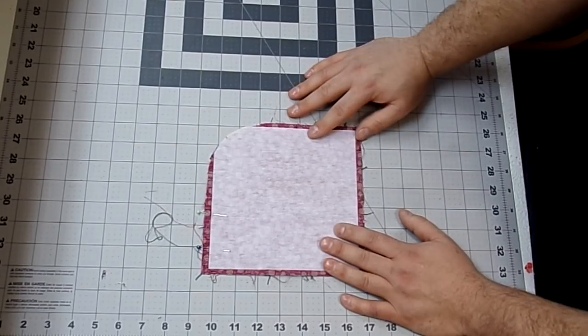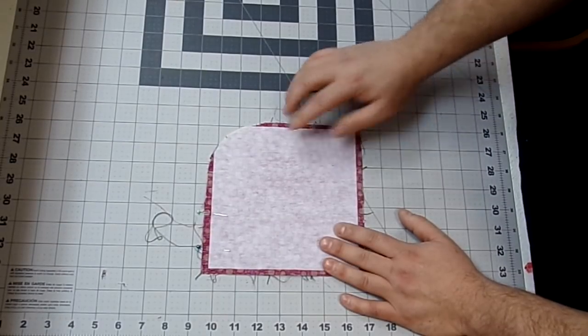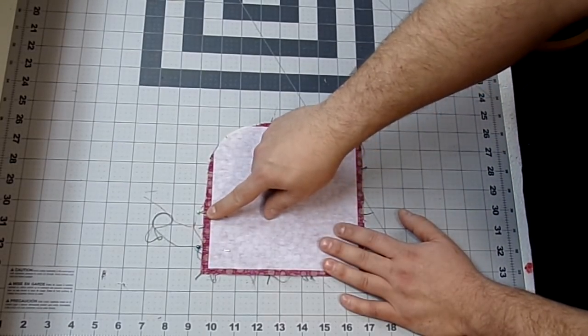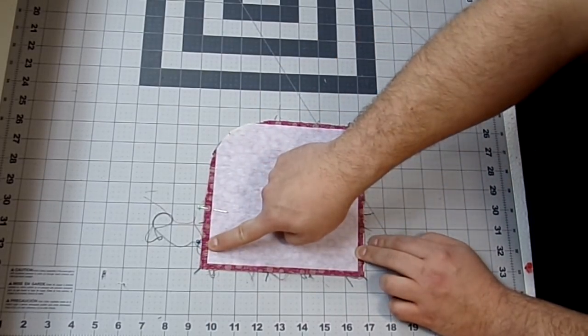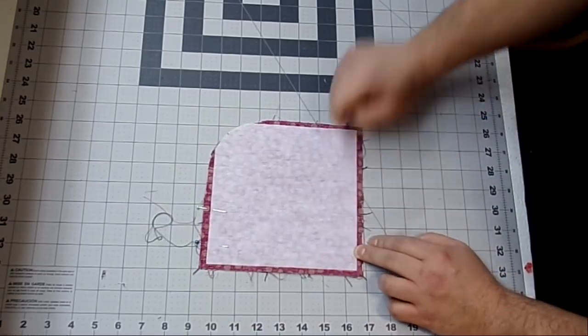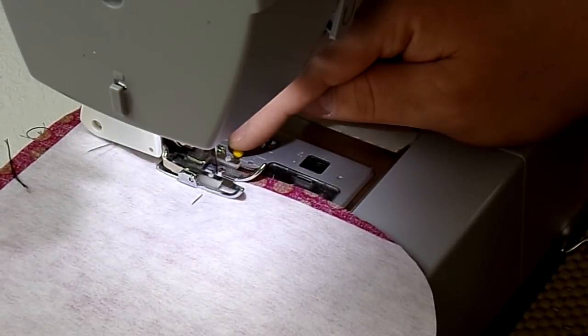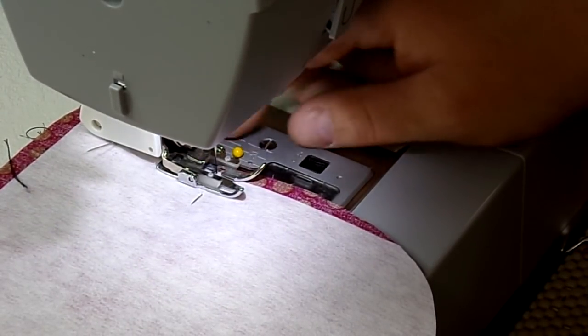And now I'm just going to take this back over to my sewing machine and using a quarter inch seam allowance, I'm going to start right here at this pin, backstitch, and I'm going to sew all the way around, backstitching here at the end. All right, so I'm starting at my first pin and I'm going to backstitch. My length is still a three.